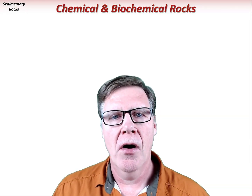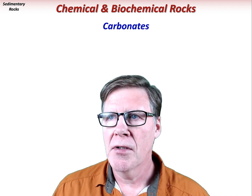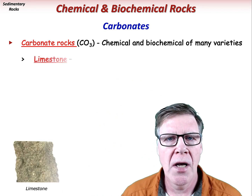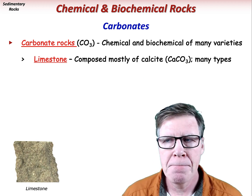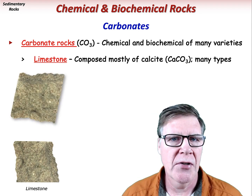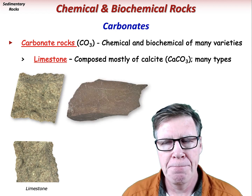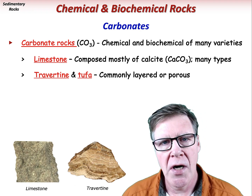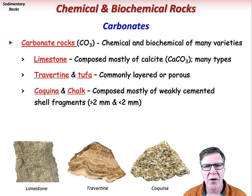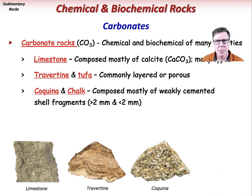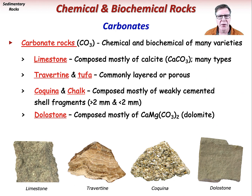Chemical and biochemical rocks are formed largely of mineral crystals, and carbonate rocks form a large group with many textural varieties. The term limestone describes many types of carbonate rock composed of the mineral calcite, or calcium carbonate — from coarsely crystalline limestone to very fine-grained limestone called micrite. Travertine and tufa are commonly layered or porous, respectively. Coquina and chalk are carbonate rocks composed of weakly cemented shell fragments, both large and small, respectively. Dolestone is a carbonate rock composed mostly of the mineral dolomite, a calcium-magnesium carbonate mineral similar to calcite, except that it does not react readily with dilute hydrochloric acid — and this is how we tell the difference between dolestone and limestone.